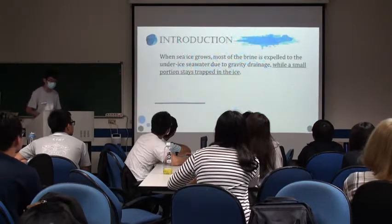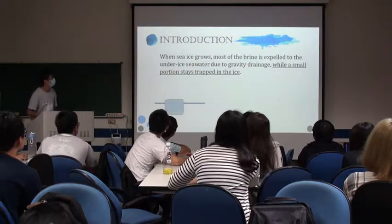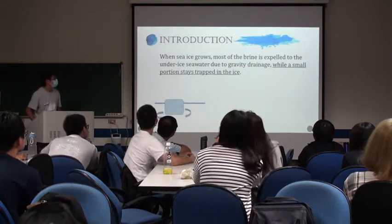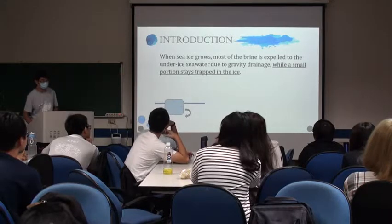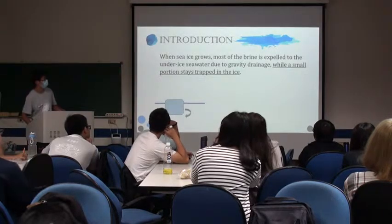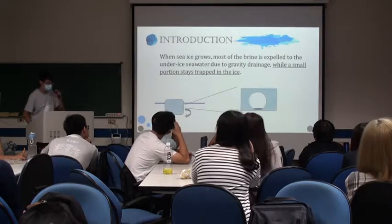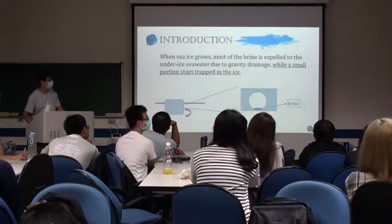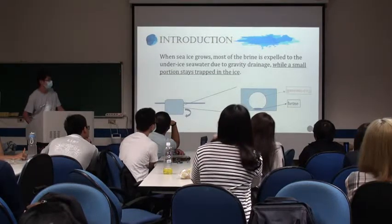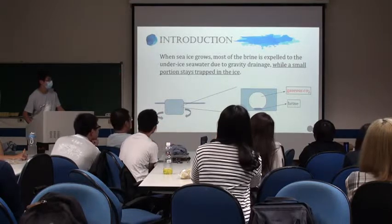Introduction. When sea ice forms, most of the brine is exposed to the under-ice seawater due to gravity drainage. But the small pockets stay trapped in the ice. And not only brine, but also the gaseous carbon dioxide stays trapped in the ice.